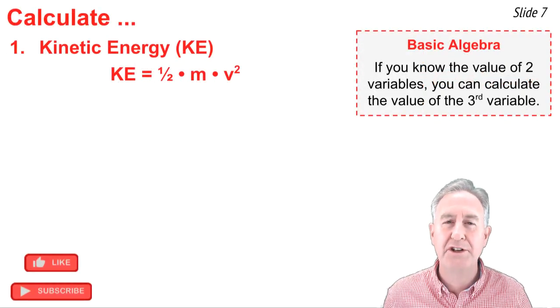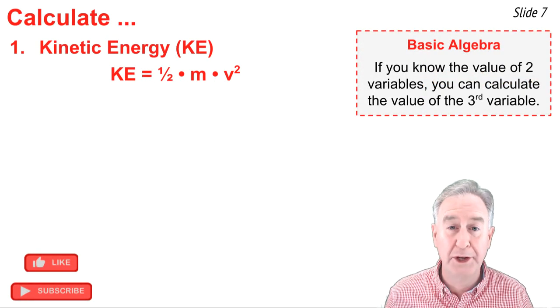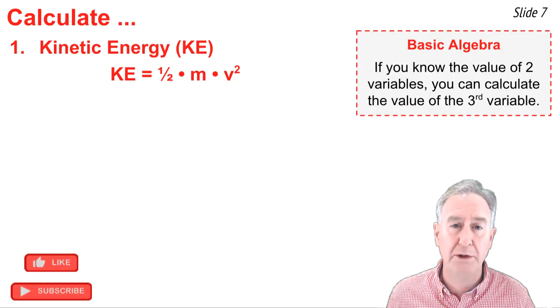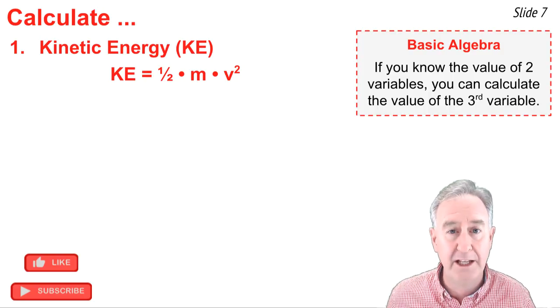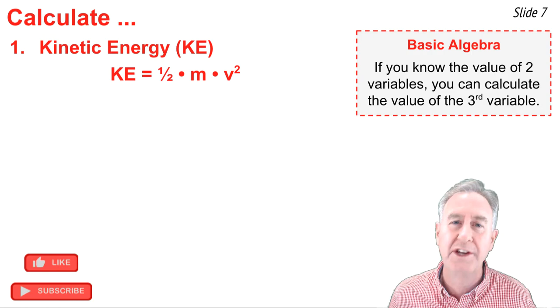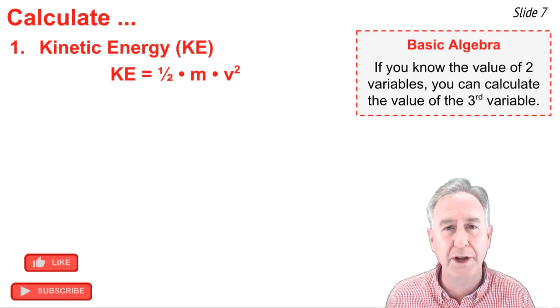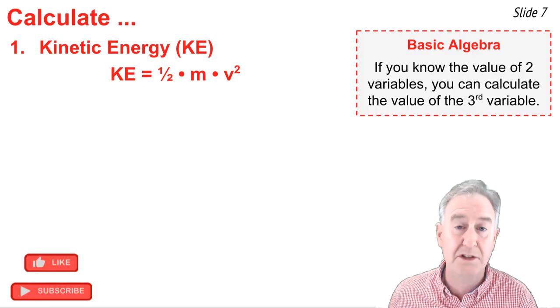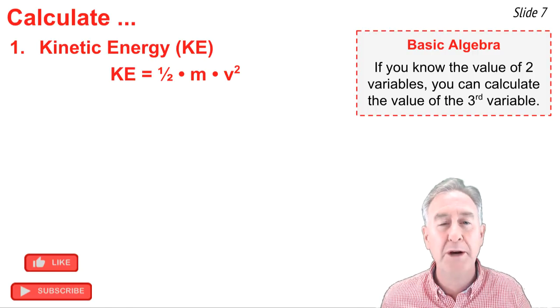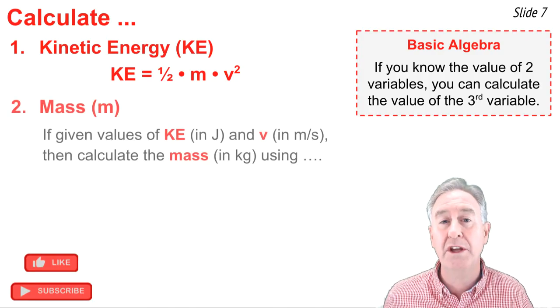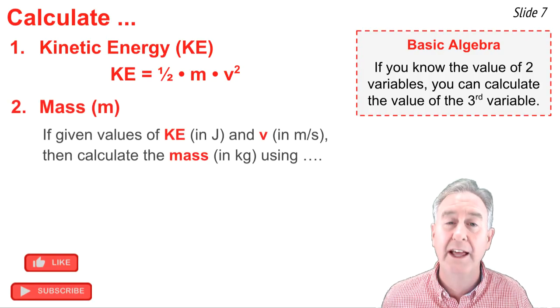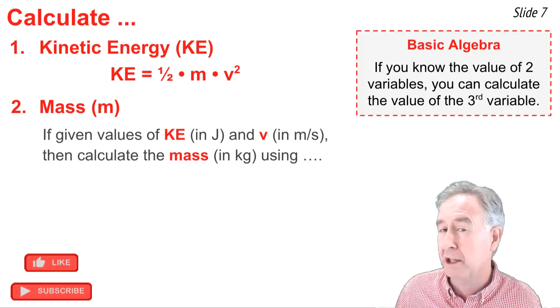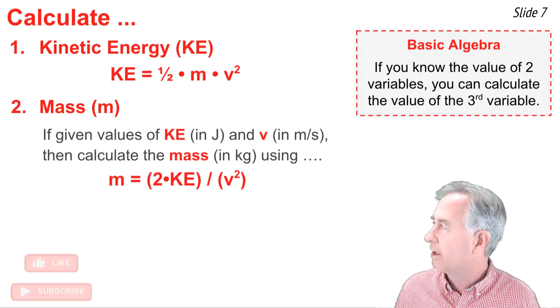We can also use the kinetic energy formula to solve problems for unknown quantities. The basic idea is this: the kinetic energy equation has three variables in it—KE, m, and v. And if you know any two of the three variables, you can solve for the third one. It's probably straightforward to say that if you know the mass and the speed, you can use the kinetic energy formula to solve for the kinetic energy. But what about solving for mass and speed? If you know the kinetic energy and you know the speed, how would you solve for the mass of the object? Well, you'd have to do some algebra on the formula in order to rearrange it to a form that looks something like this: mass equals 2 times the kinetic energy divided by the speed squared.